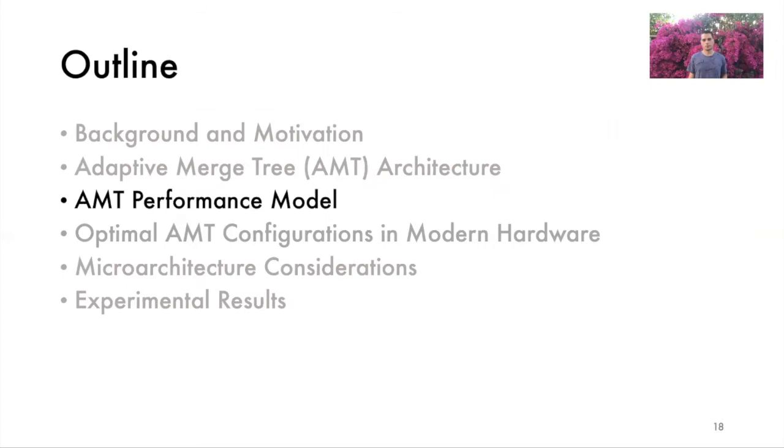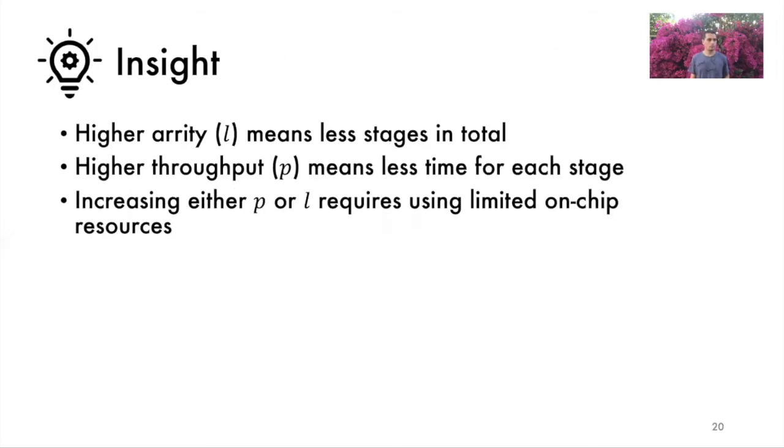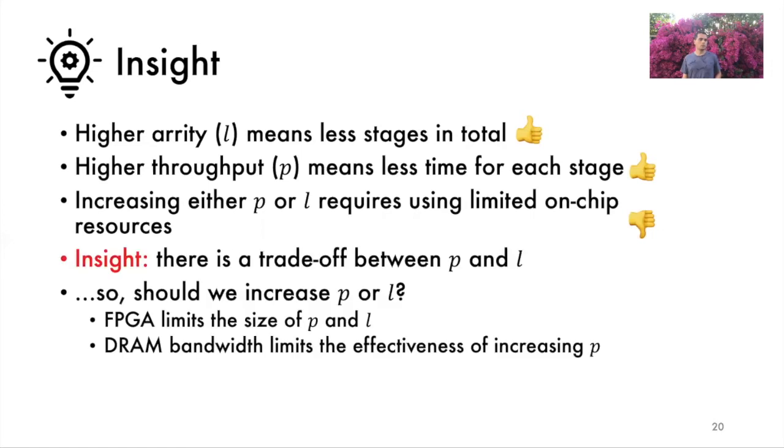Now let's look at the performance of a merge tree. Specifically, what affects total sorting time? Two things. First is the total number of merging stages required to sort. This depends solely on the arity of the tree. In the previous example, we sorted 64 records in two stages using a tree of arity equal to eight. Two stages were sufficient because eight squared equals 64. In general, the total number of stages will be the logarithm base l of the number of records in the array N. The second factor that affects sorting time is how long a single merge stage takes. Assuming memory bandwidth is not the bottleneck, the time to perform a merge stage depends solely on the throughput of the tree P. So higher arity L means we need less merge stages, and higher throughput P means we need less time to finish each stage. Both of these are good. However, increasing either P or L requires using limited on-chip resources, and that's bad. So this presents a trade-off. Since we cannot increase both P and L, which one is more important? Well, it depends.